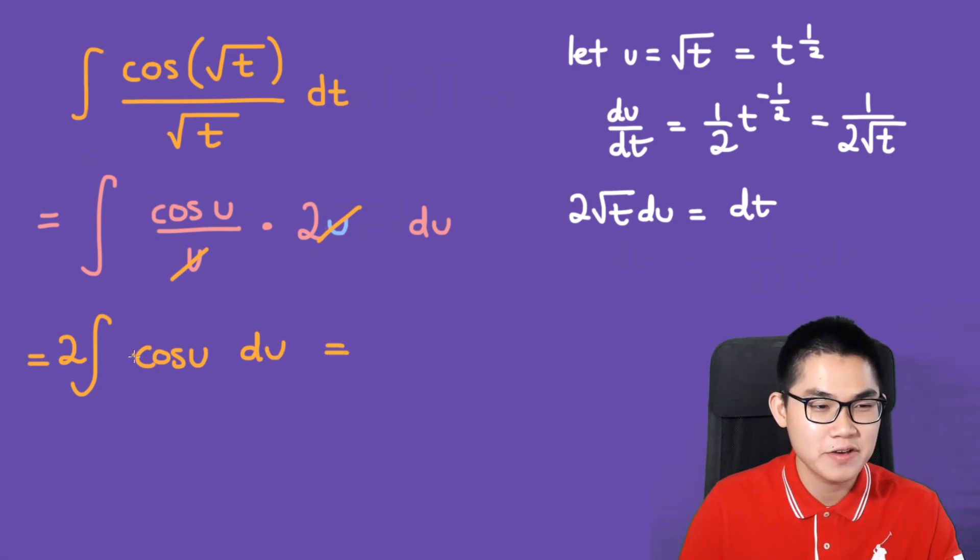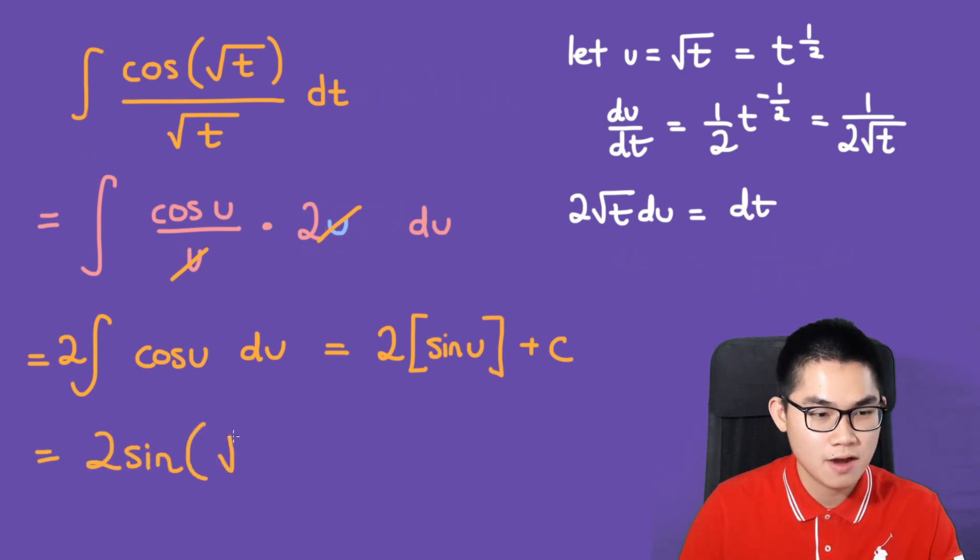The antiderivative of cos u is sin u plus C. So we have 2 times sin u plus C, which gives us 2 sin(√t) plus C.